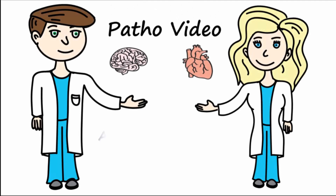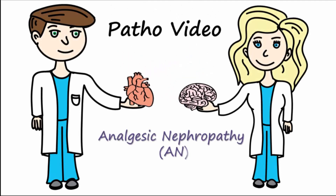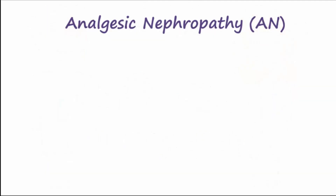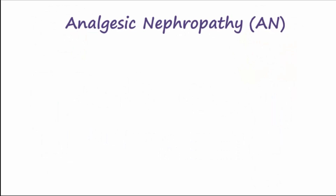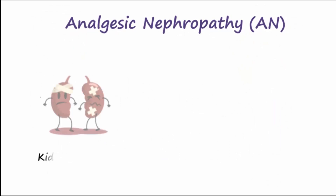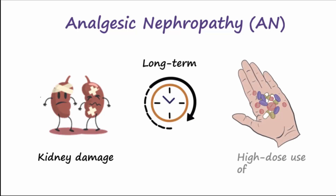Our topic today is analgesic nephropathy. Analgesic nephropathy, or AN, refers to the kidney damage that can result from long-term, high-dose use of non-steroidal anti-inflammatories, commonly known as NSAIDs.